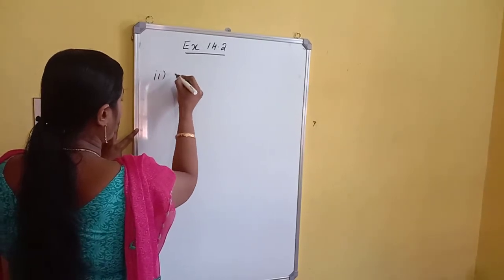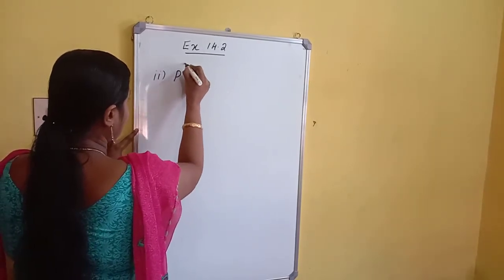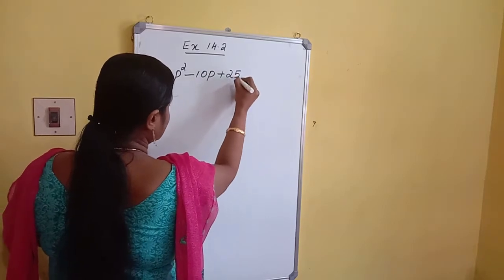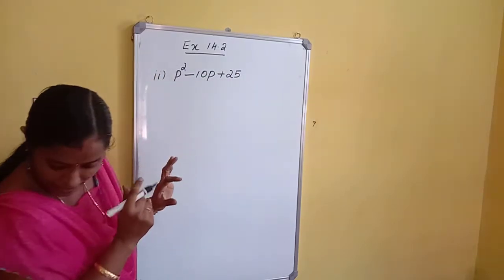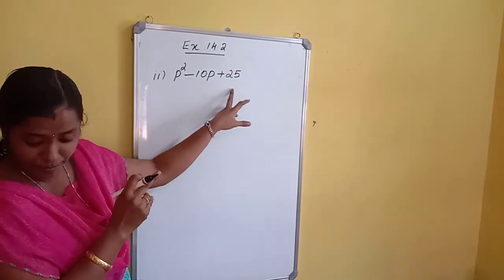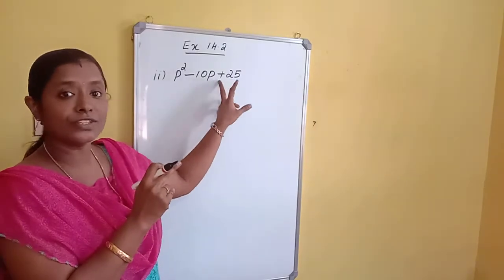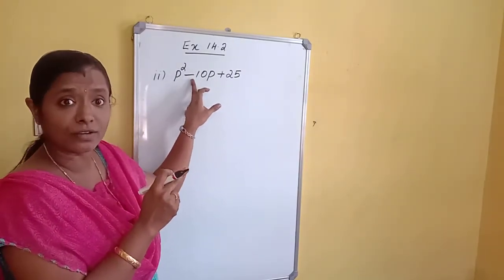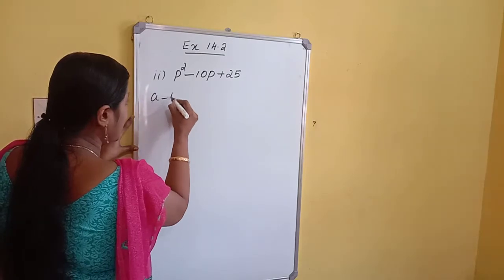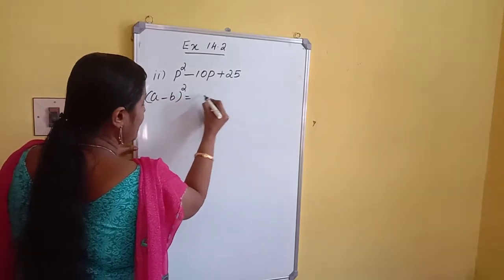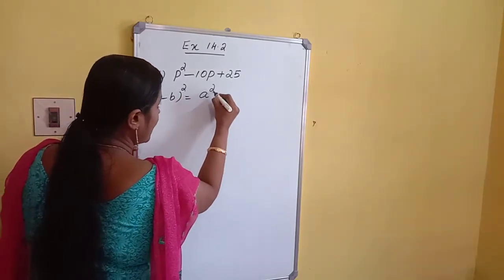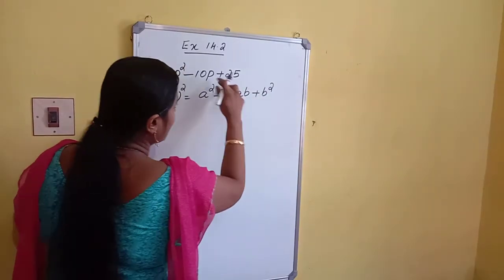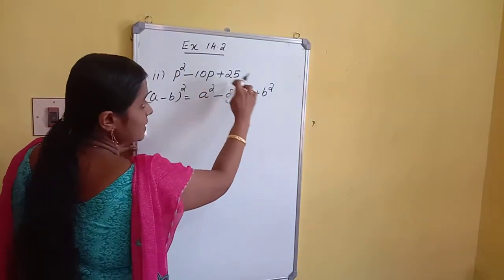In exercise 14.2, the second problem is P squared minus 10P plus 25. One term is negative, so we use the identity: A minus B whole square equals A squared minus 2AB plus B squared.